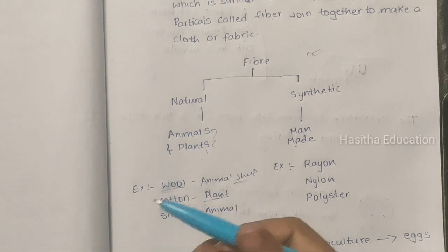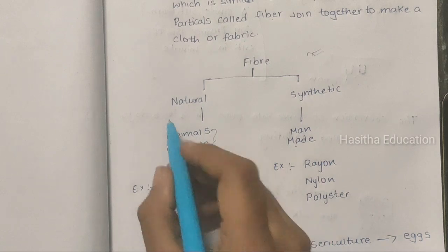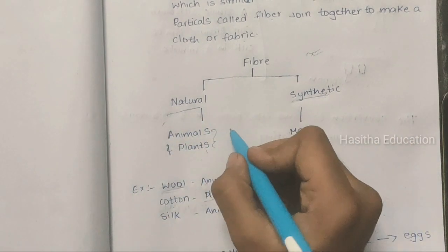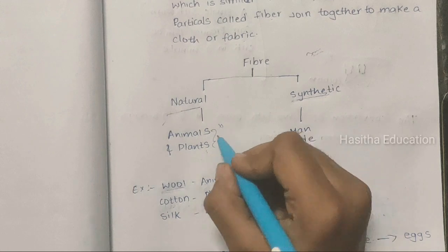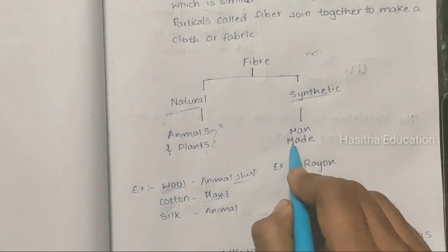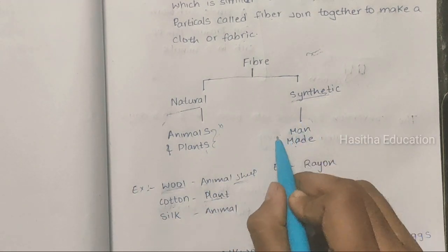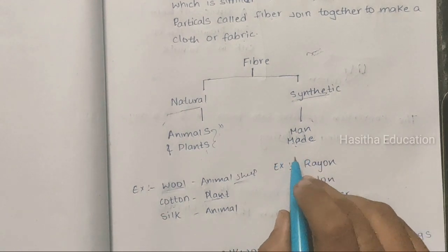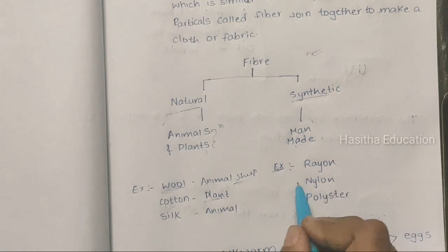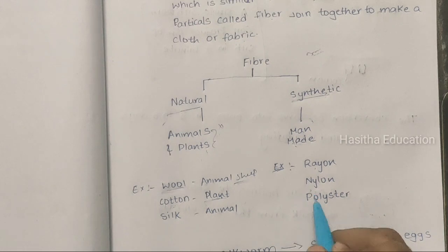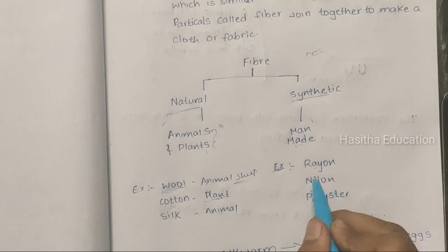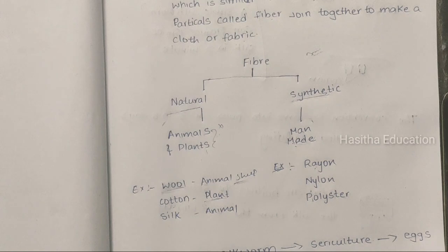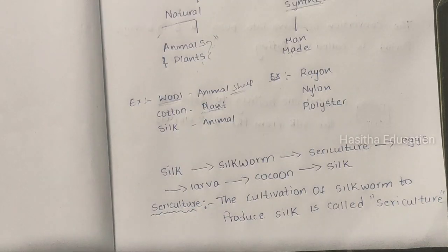Next, we learn synthetic fibers. Synthetic fibers are those which do not come from plants or animals — they are man-made, not from nature. Some examples of synthetic fibers are nylon, polyester, and rayon. Since they are man-made, they are called synthetic fibers.